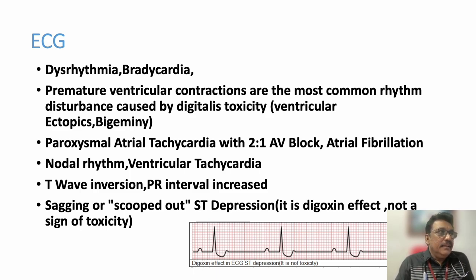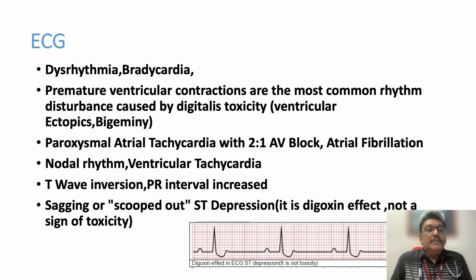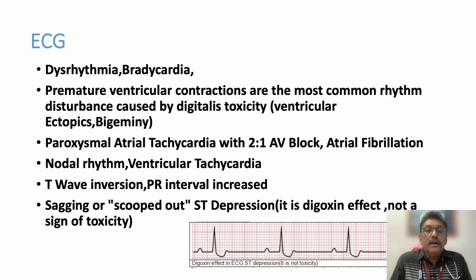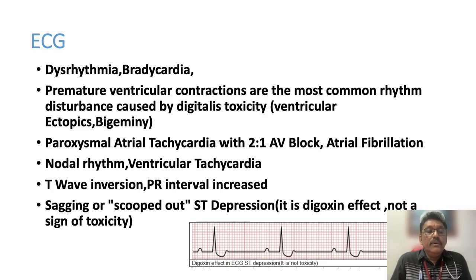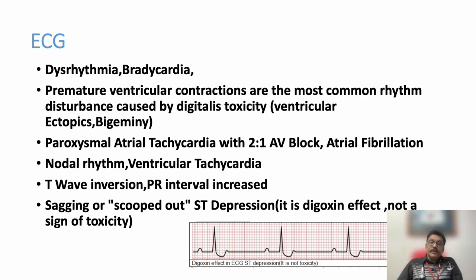The problem with Digoxin is its very narrow therapeutic index — below the therapeutic range the action is insufficient, and above it patients can have arrhythmias. ECG may show any type of dysarrhythmia: bradycardia, premature ventricular complexes, bigeminy, paroxysmal atrial tachycardia with cardiac block, atrial fibrillation with controlled heart rate, nodal rhythm, ventricular tachycardia, T-wave inversion, and prolonged PR interval. The 'reverse tick sign' or scooped-out ST depression on ECG is the Digoxin effect — not a sign of Digoxin toxicity.